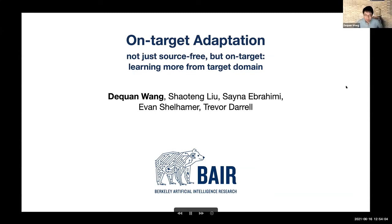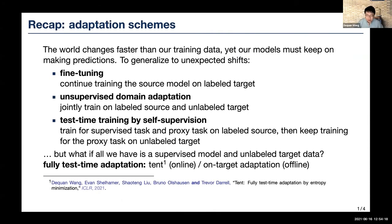Hi, everyone. I'm Deshwan Wang, a PhD student with Trevor Darrell. Today it's my pleasure to introduce our recent work on on-target adaptation, a joint work with Xiaotan, Sanna, Ivan, and Trevor. There are several related works to bridge the gap between training and testing data: fine-tuning on labeled target data is direct and simple; unsupervised domain adaptation reduces the demand for target-domain annotation; and self-supervised methods such as rotation prediction and location prediction augment representation learning as proxy tasks. But none of these address all practical settings — for example, what if you only have a supervised model and unlabeled target data? That is our fully test-time adaptation setting.